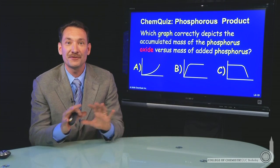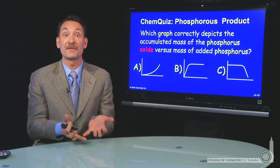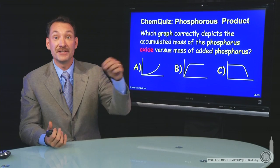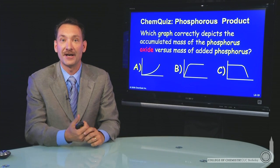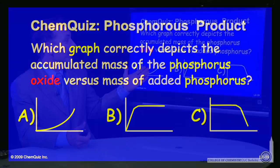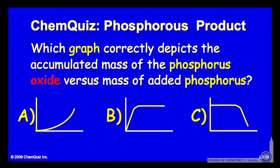So let's do that phosphorus oxide reaction in a vessel where we have a fixed amount of oxygen and we add differing initial amounts of phosphorus. Which graph would correctly depict the accumulation of the phosphorus oxide versus the increasing amount of initial phosphorus? Think about that for a second and make a selection.